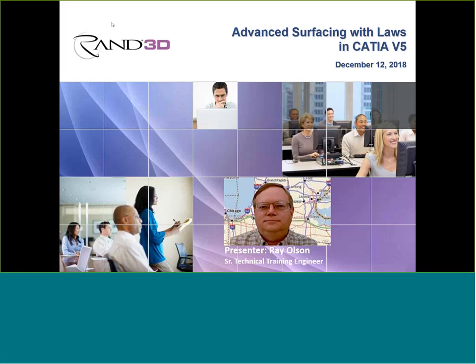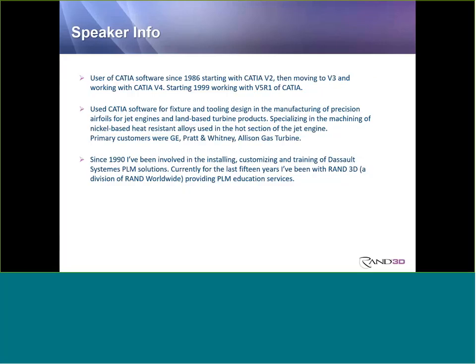Thank you very much. Today we're looking at the Generative Shape Design Workbench of CATIA V5, specifically one of its capabilities: the Law command. A little bit about my background — I've been a longtime user of CATIA since 1986, starting with version 2, and working with CATIA V5 since 1999. Prior to joining RAN3D, I was involved in using the software in the creation of airfoils for jet engine components. Since then, I've been involved in installing, customizing, and training in CATIA with RAN3D, a division of RAN Worldwide, for the last 15 years.